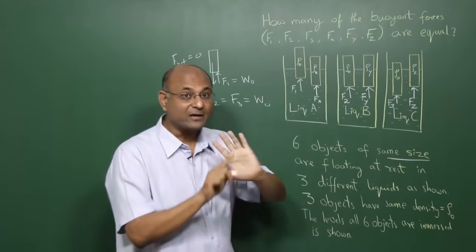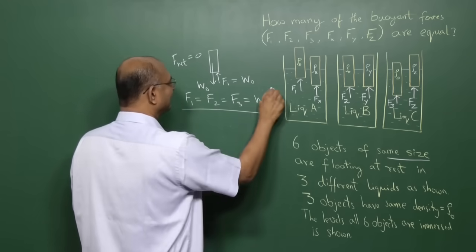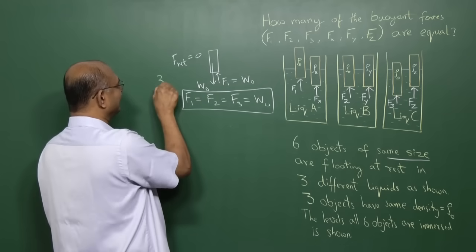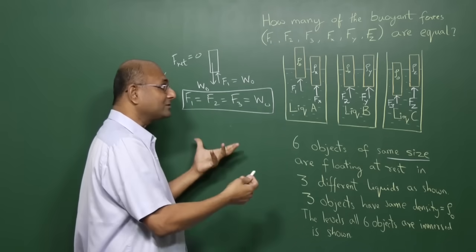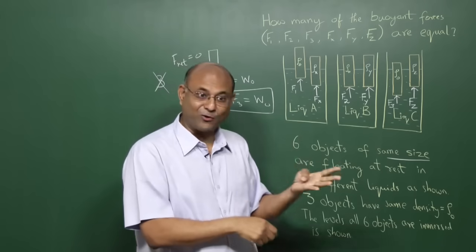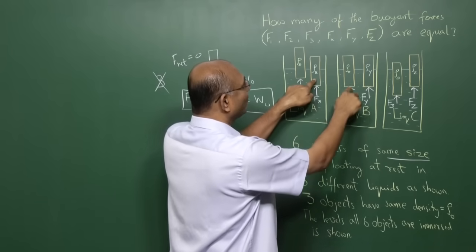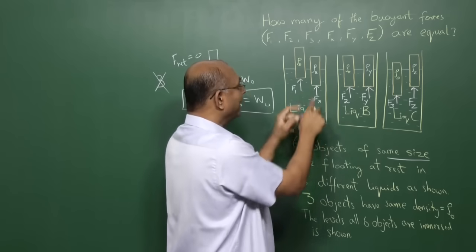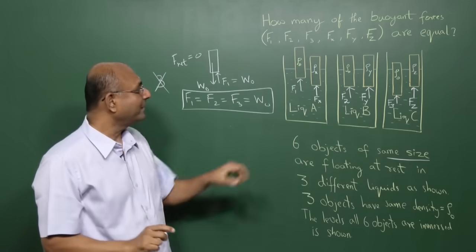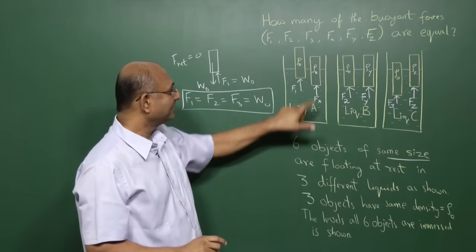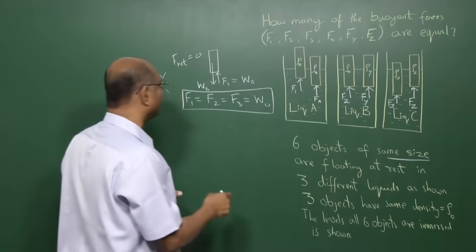Remember, the weights of the other three are not equal. Now some people may come to the conclusion that the answer is 3, but unfortunately 3 is not right. There are others who may come to the conclusion that the answer is 4, which happens to be right. But if you thought that it was because it was rho x, rho 0, rho y, and rho z, and because they were dipped in the same amount, that is also not right. Why? Because rho x is dipped in liquid A, rho y is dipped in liquid B, so they are obviously not the same buoyant force.